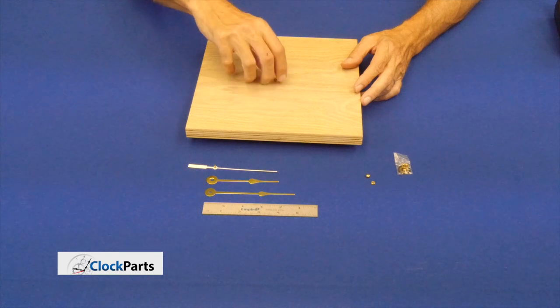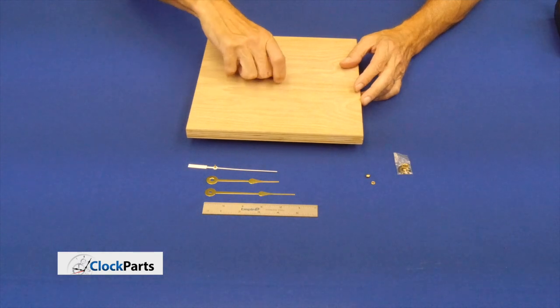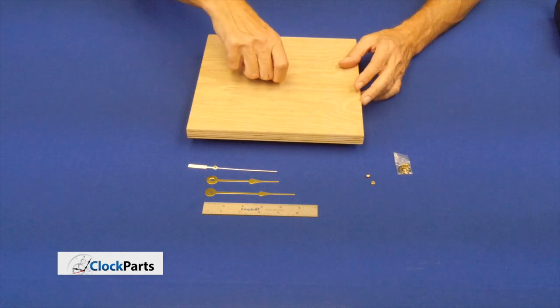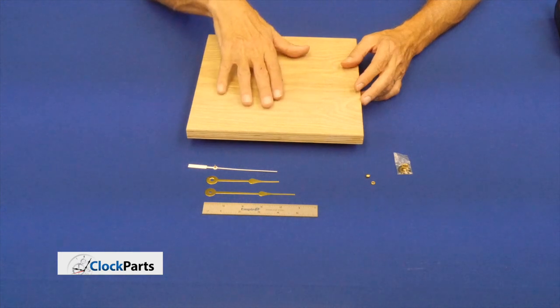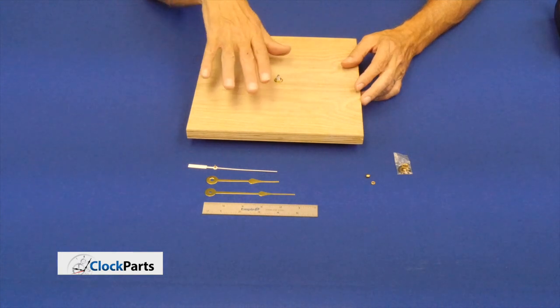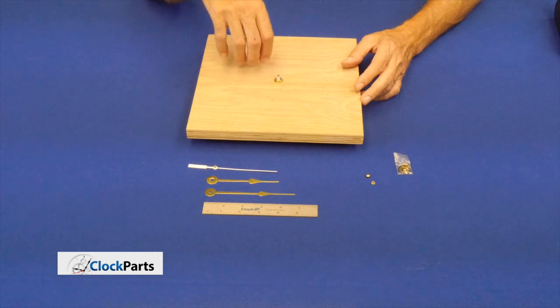A word of caution here. Only hand tighten this. You don't need to take a pair of pliers to it, because if you hand tighten it, it's secure enough. If you over tighten it with pliers, the movement may run slow.